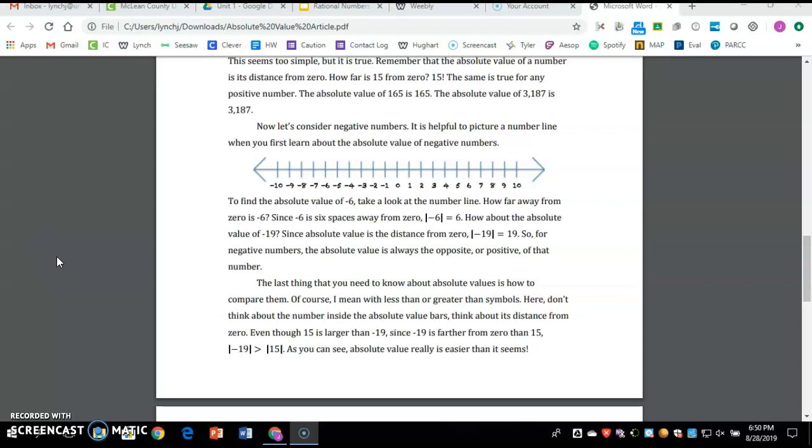To find the absolute value of negative six, take a look at the number line. How far away from zero is negative six? Since negative six is six spaces away from zero, the absolute value of negative six is six. How about the absolute value of negative 19?